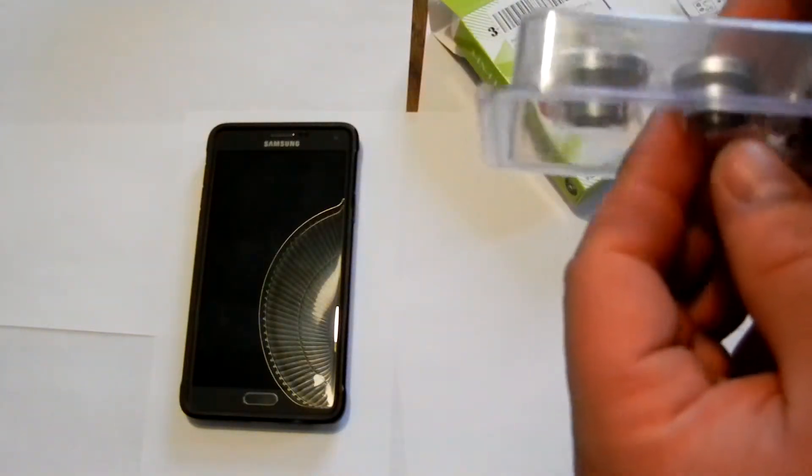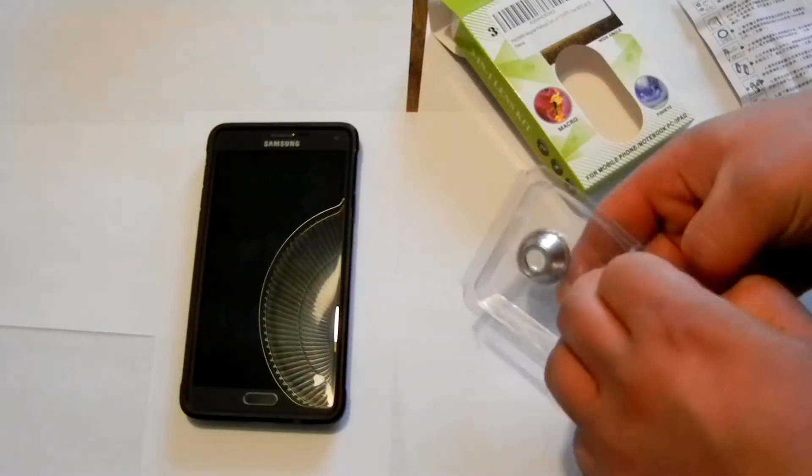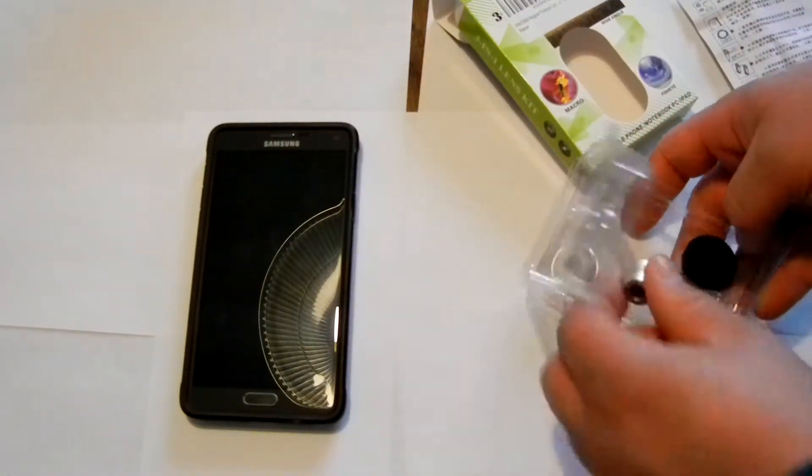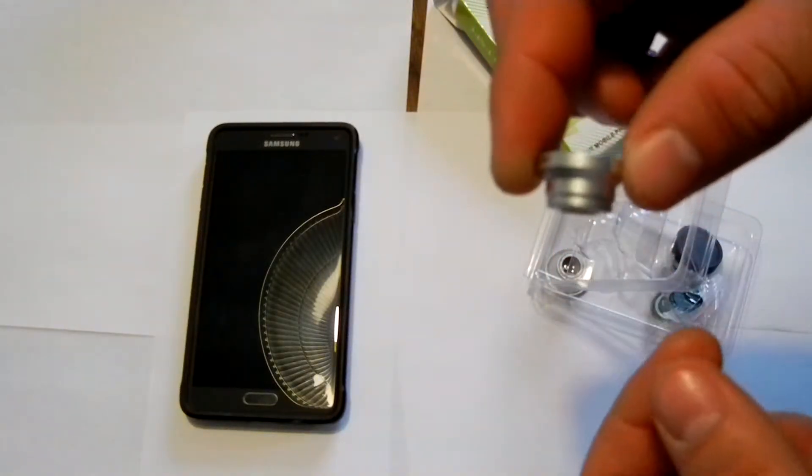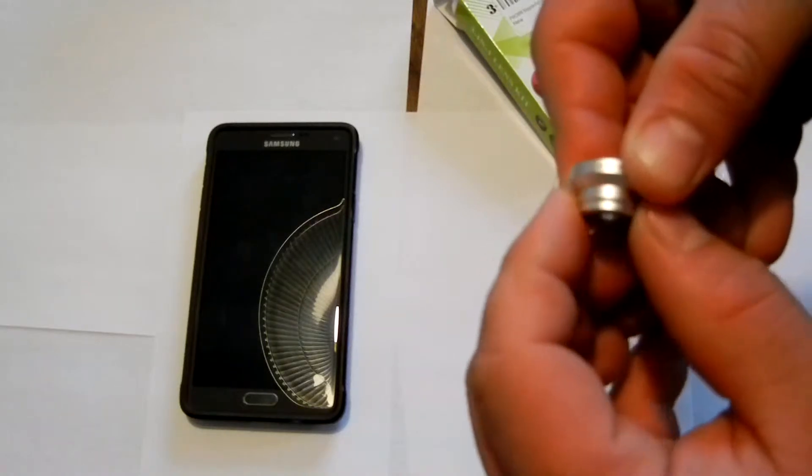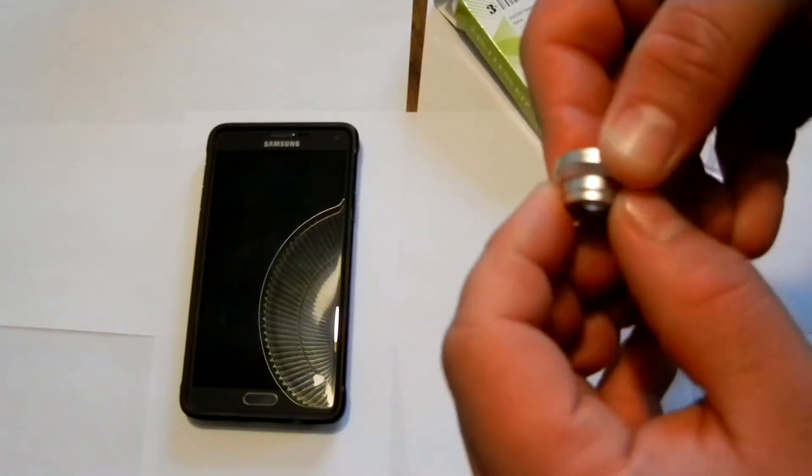The wide angle lens is actually 2-in-1. This lens down here, I'll show you. This lens right here, this smaller lens, is actually the wide angle slash macro lens. What you do is you unscrew it like this.